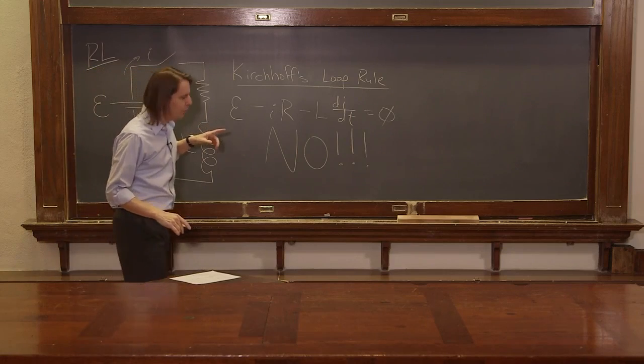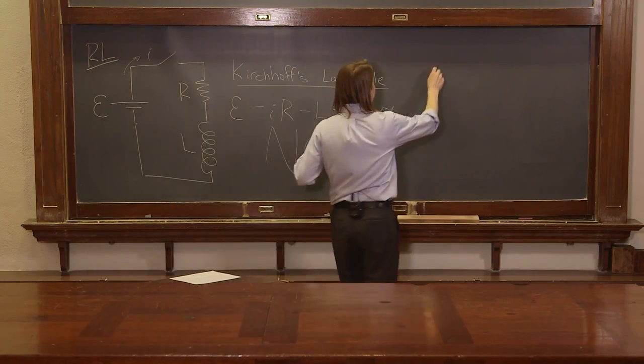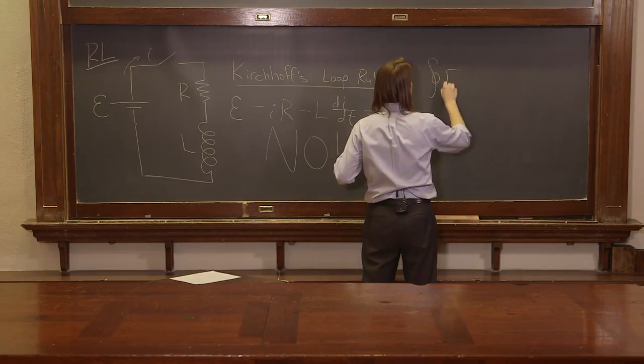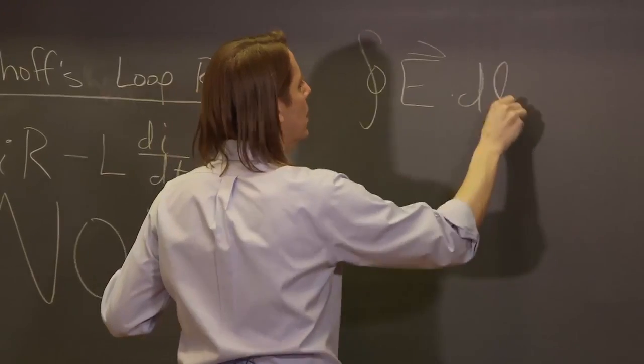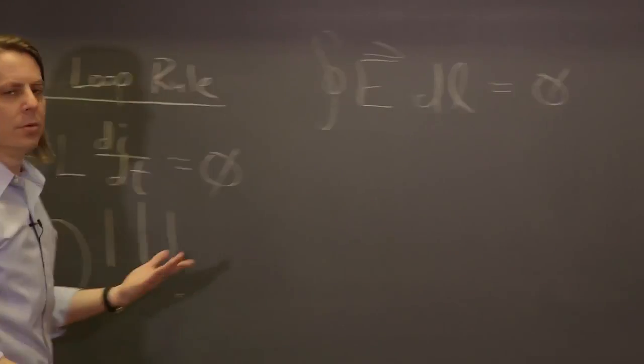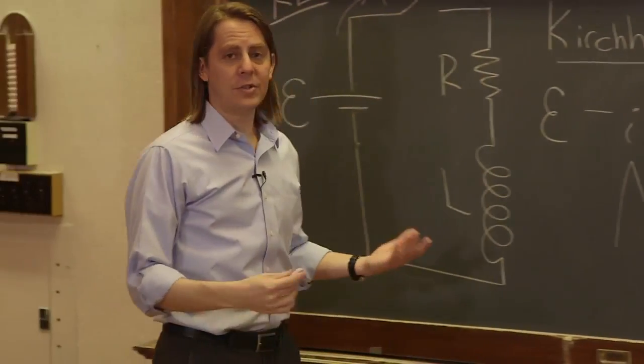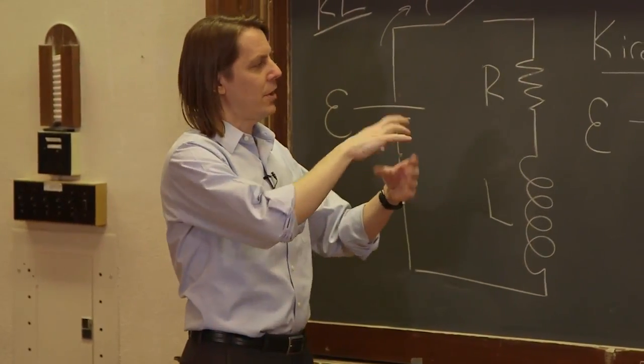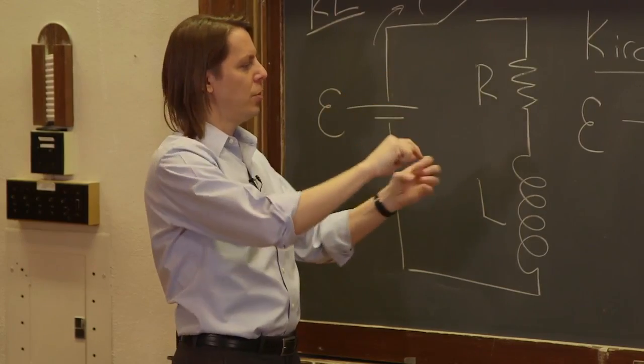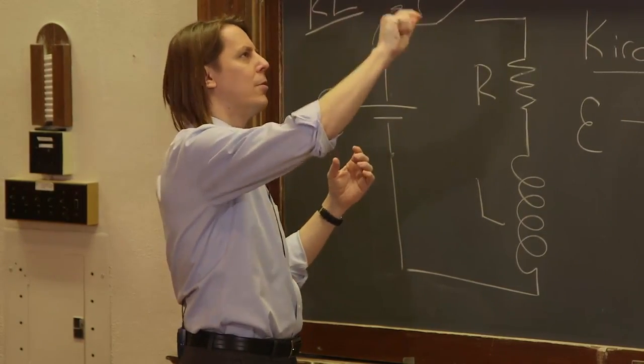Let's think about what Kirchhoff's loop rule is really saying. It's really saying that the integral around a closed loop of E dot dl equals zero. And that's true in electrostatics. We know that the electrostatic field is conservative. If you have a charge here making a big field, and you start here,